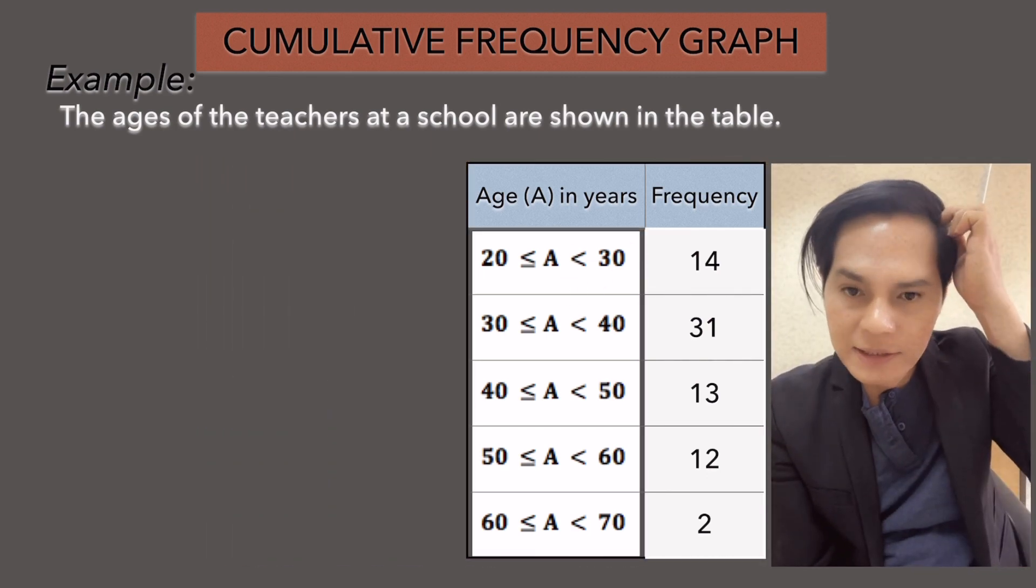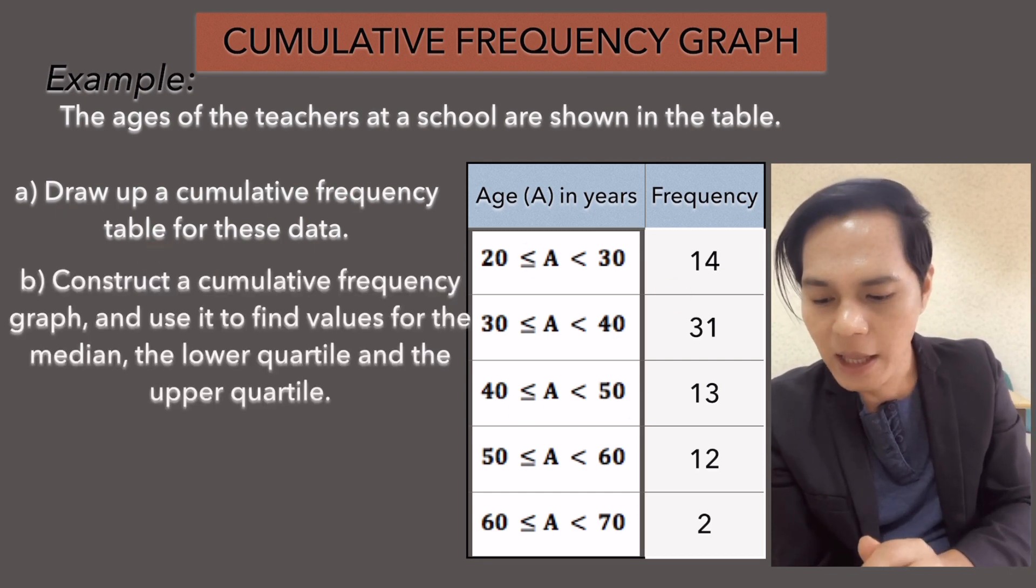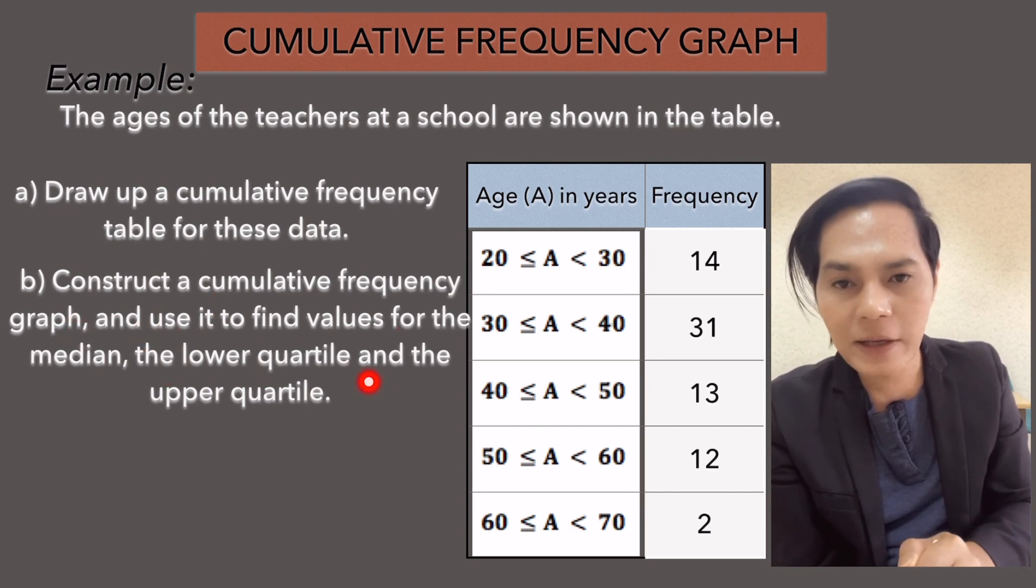Now, our task here is to draw up a cumulative frequency table for this data, and then construct a cumulative frequency graph and use it to find values for the median, the lower quartile and the upper quartile.